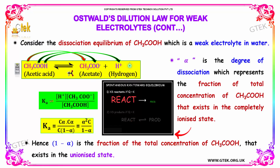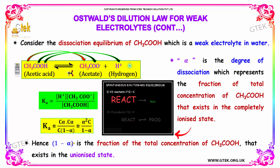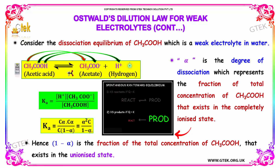Alpha is the degree of dissociation, which represents the fraction of the total concentration of Acetic Acid that exists in the completely ionized state. Correspondingly, (1 - alpha) is the fraction of the total concentration of Acetic Acid that exists in the unionized state.